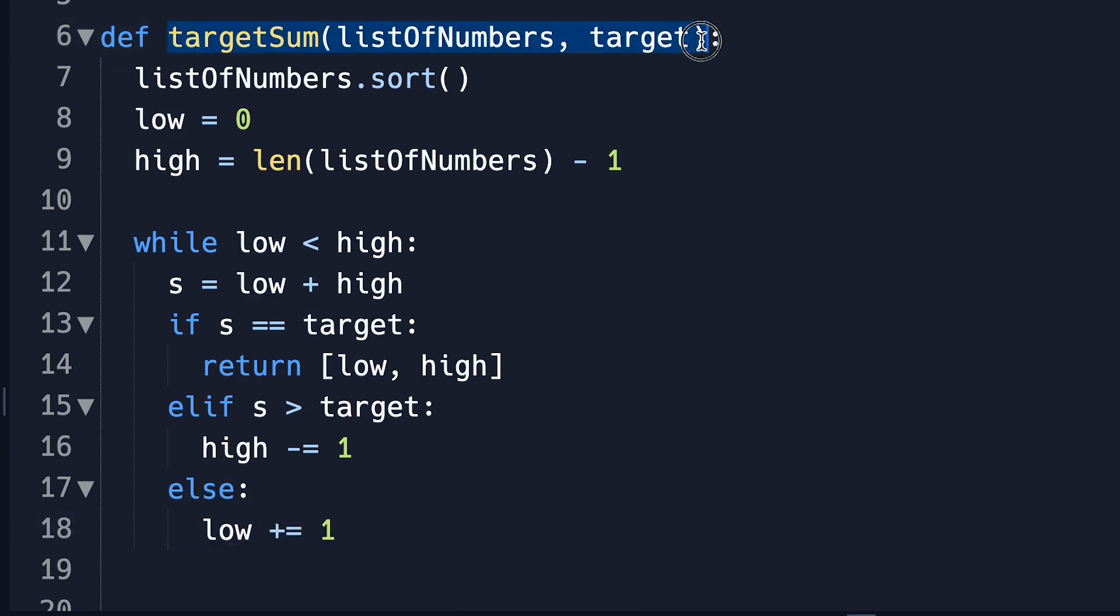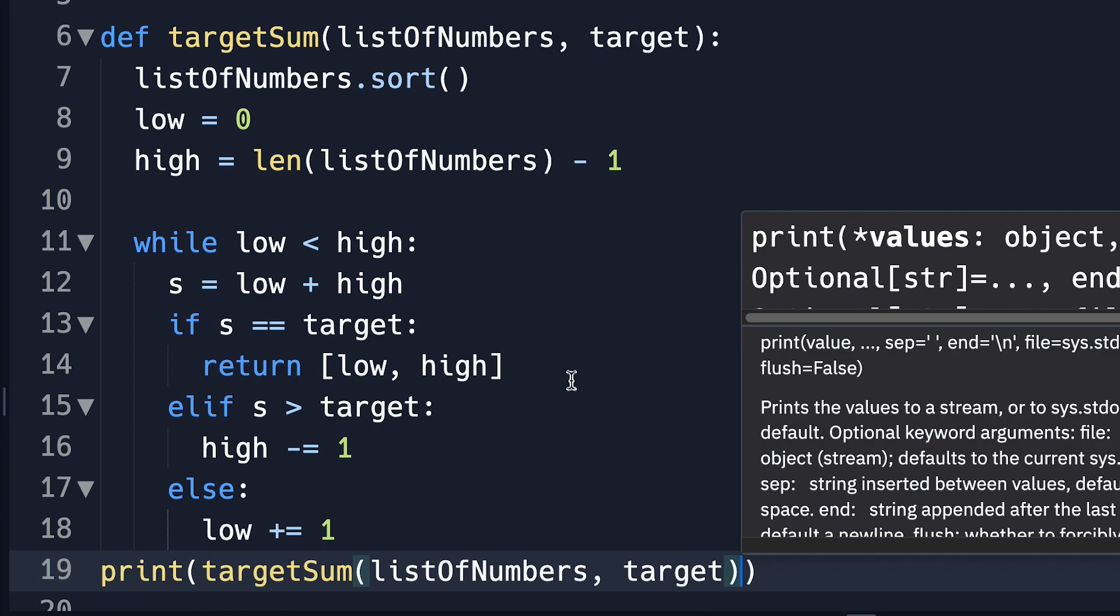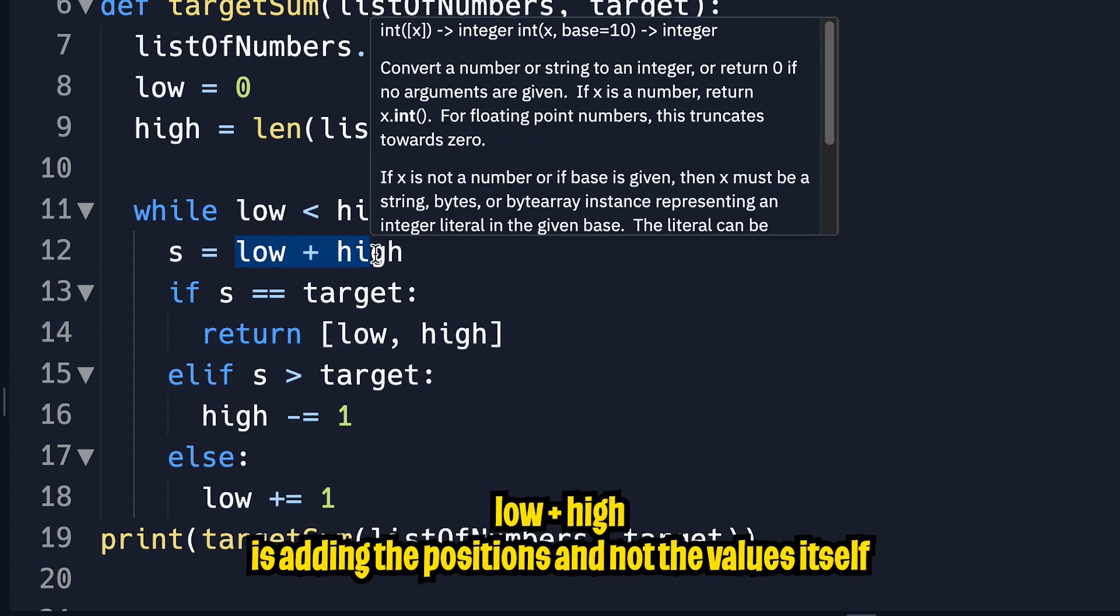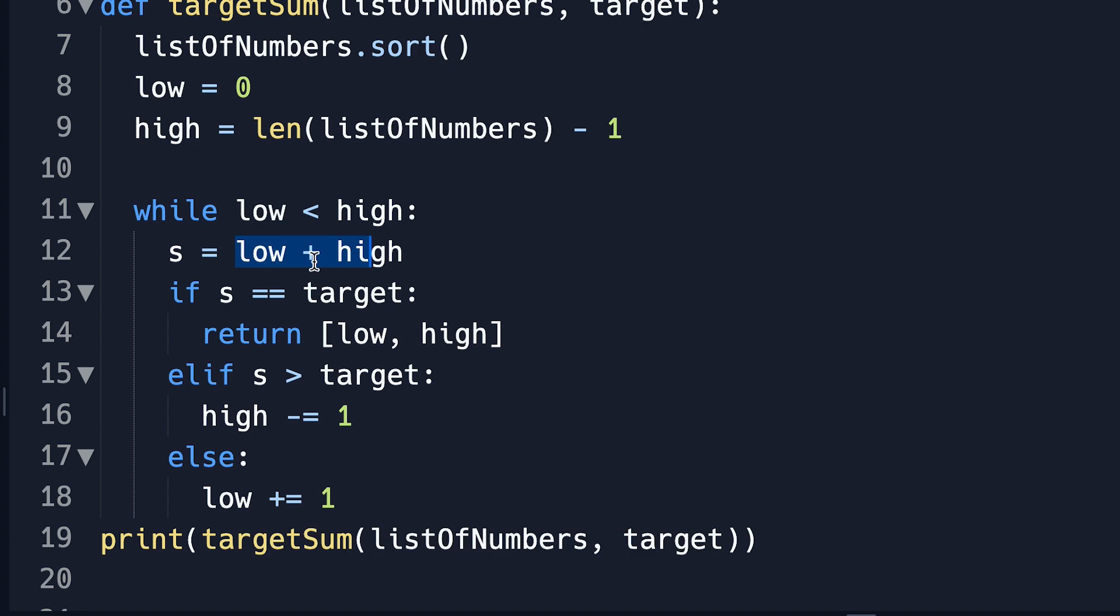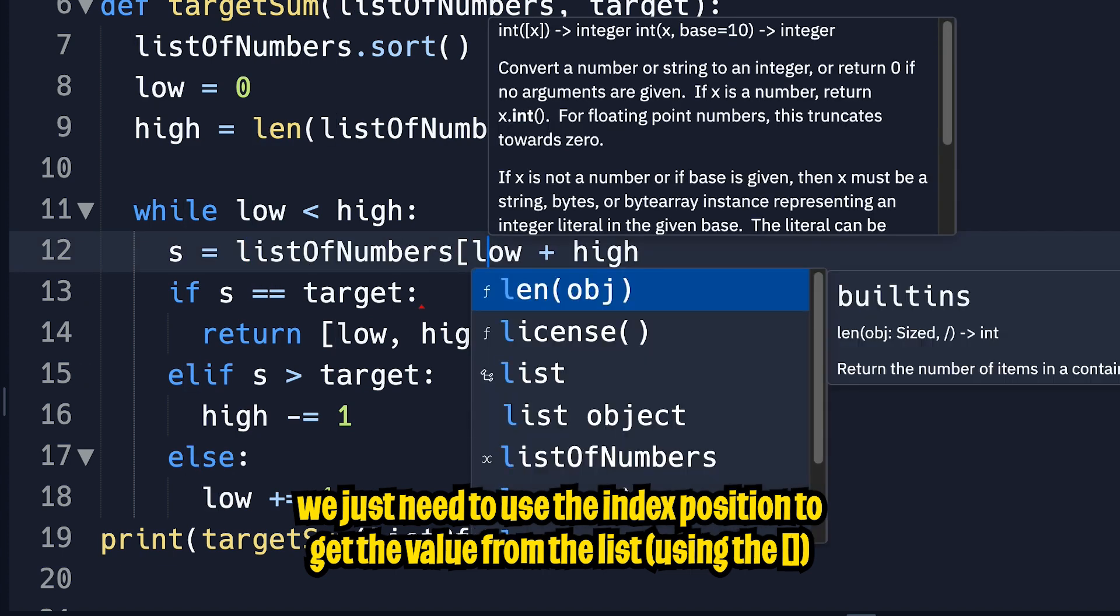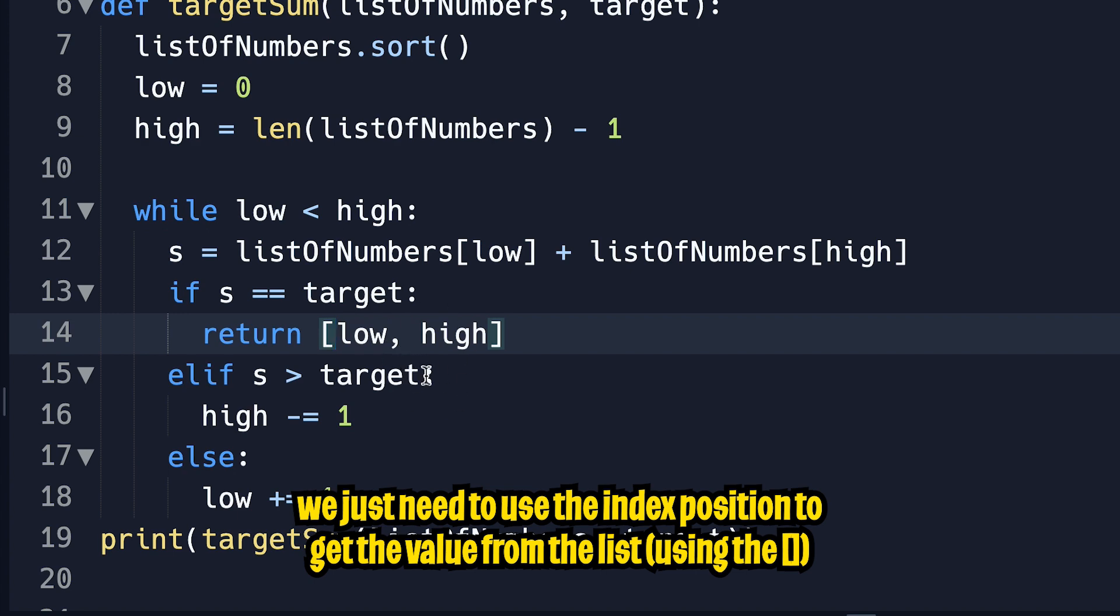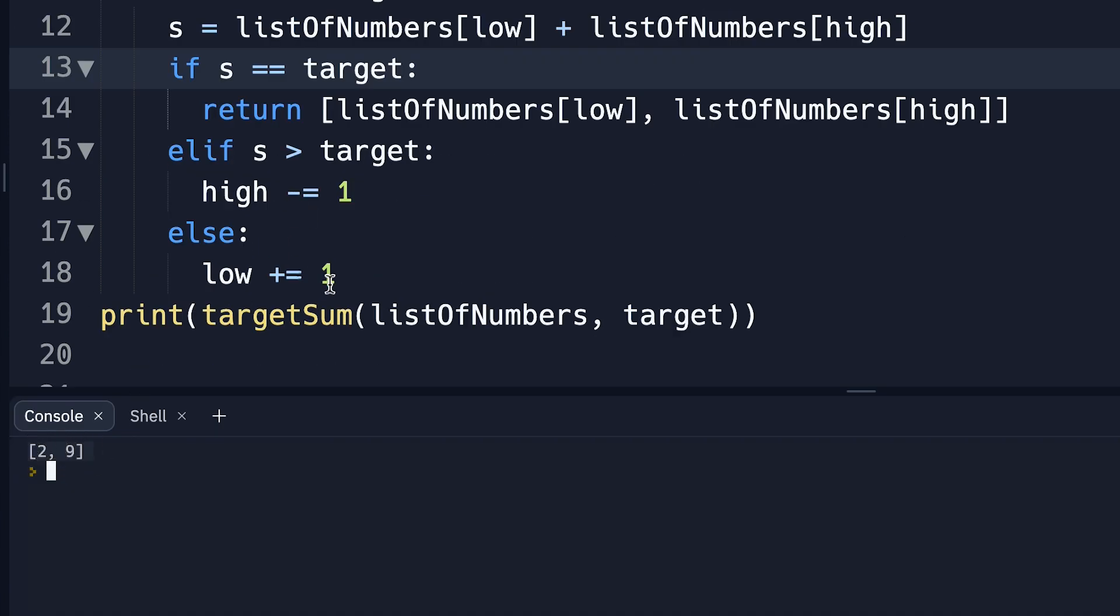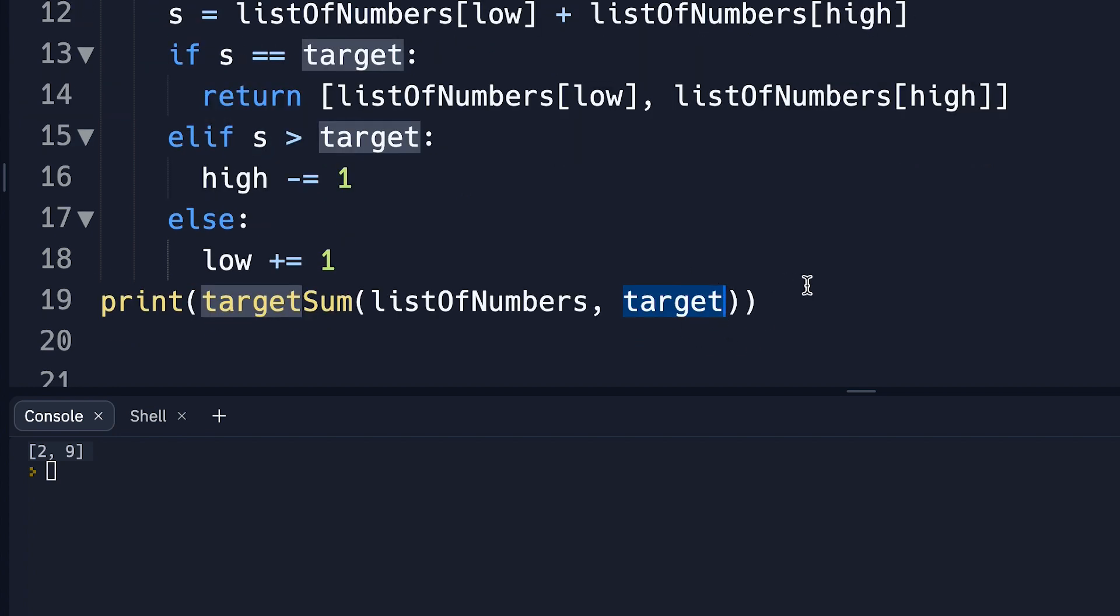So now let's call a function. So we can just copy this. And in line 19, let's type print and then paste the function call. And before we hit run, I think I forgot to do one thing. So here we're adding low plus high, which is the positions of the numbers. But we actually want to add the numbers itself. So to get the numbers, all we have to do is copy list of numbers. So here, list of numbers and add it here as well. And also, instead of returning the low and high, we just want to return the numbers. So now we can do low and high. So now let's click run. And as you can see, we got the values two and nine, which sums up to 11. So instead of using 11 as a target, let's use seven. And now let's click run. And as you can see, we got two and five, which adds up to seven.